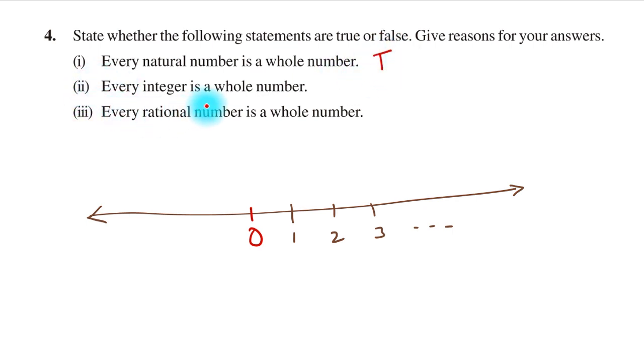Second statement: Every integer is a whole number. If we include the opposite of natural numbers along with natural numbers, these form the set of integers. The statement says every integer is a whole number. Is this true? No. Negative one is an integer, but it is not a whole number. Similarly, all negative integers are not whole numbers. Therefore, this statement is false.